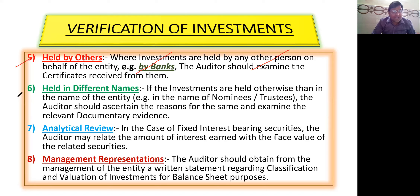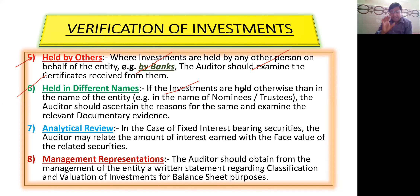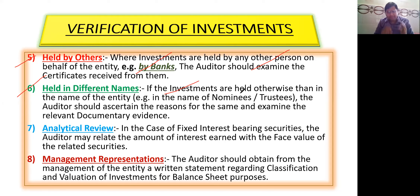Sixth point — held in different names. If investments are held otherwise than in the name of the entity — for example, in the name of a nominee or trustee — the auditor should ascertain the reason for the same and examine the relevant documentary evidence. The auditor will check why the investment is not in the entity's own name and examine supporting documents.